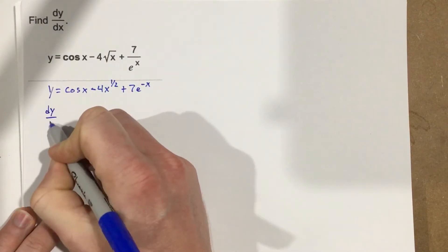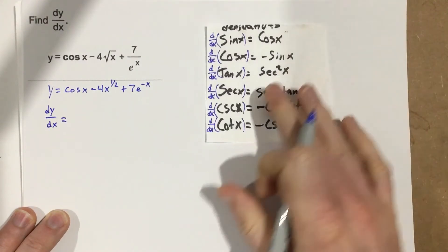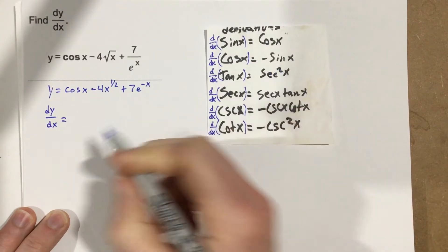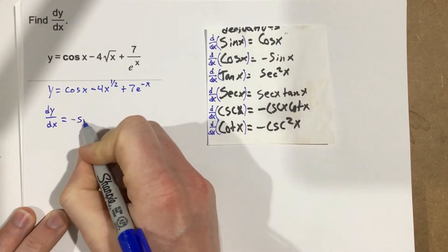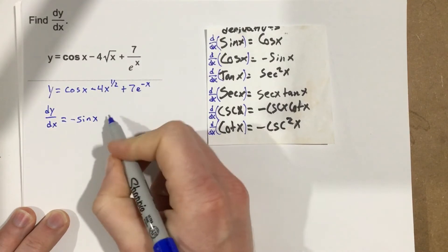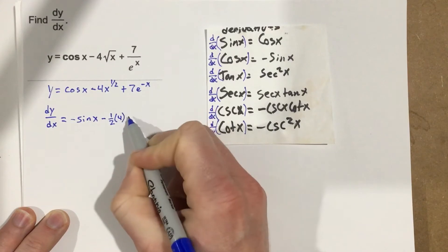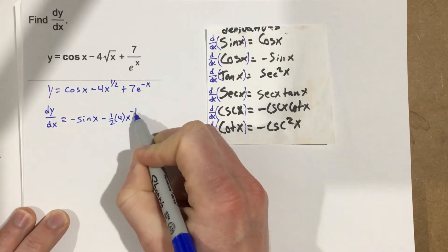So I'm going to say dy over dx equals, now the derivative of cosine we know to be negative sine. So I'm going to write this as negative sine x. I bring the power to the front so I have minus 1 half times 4x to the negative 1 half.